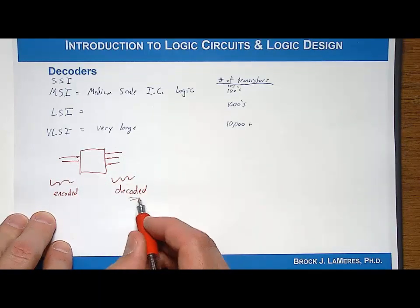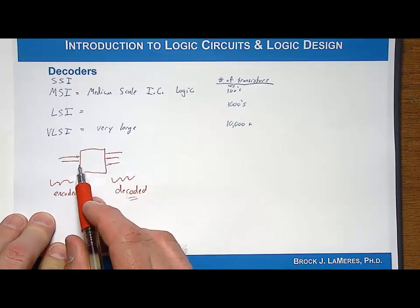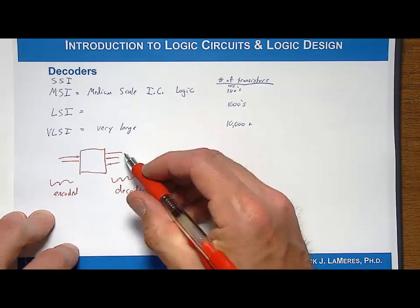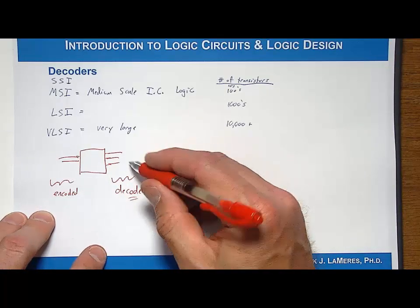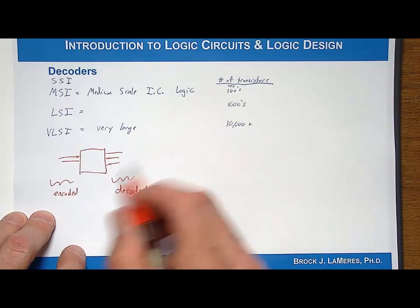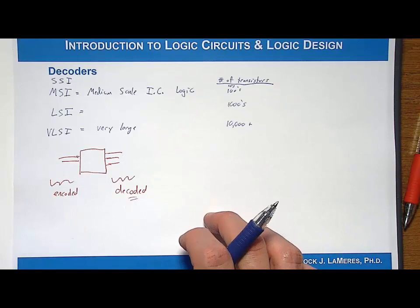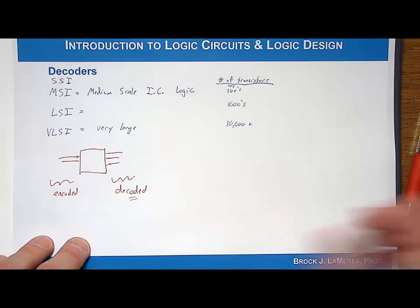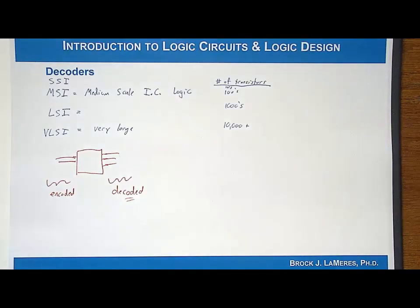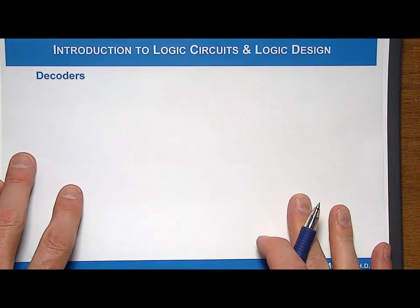The outputs are decoded, meaning that they assert for particular codes. You might have an output that asserts for one code or only a certain number of codes, but they assert for specific codes. A decoder can have, decoders usually have a larger number of outputs than they do on the inputs, which makes sense because the inputs are encoded. Let's take a look at a one-hot decoder as an example.